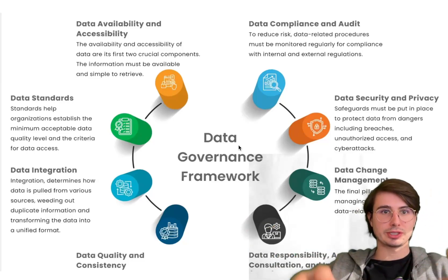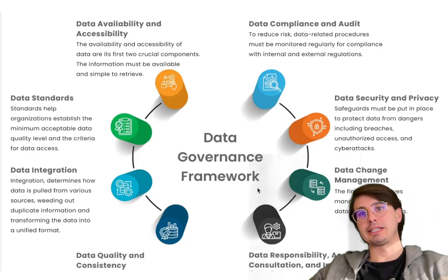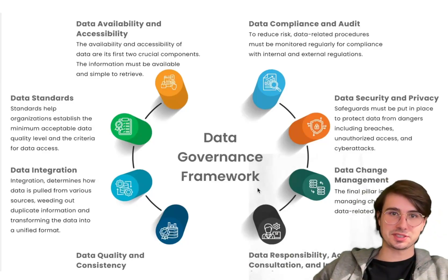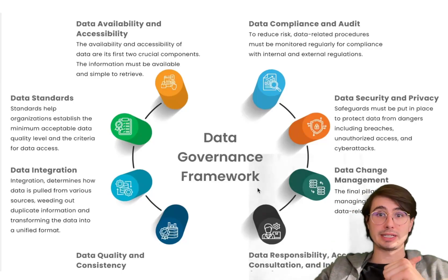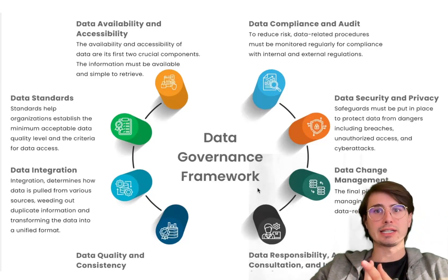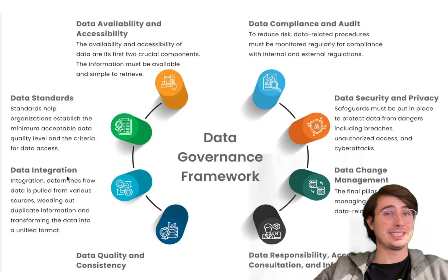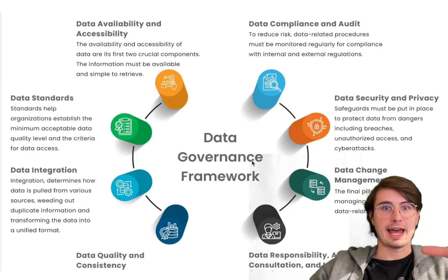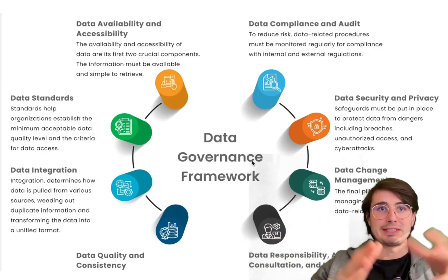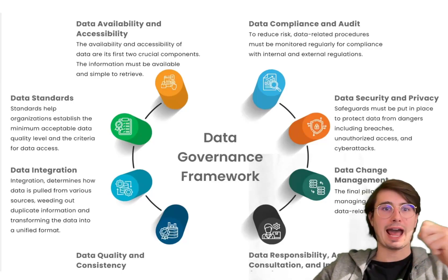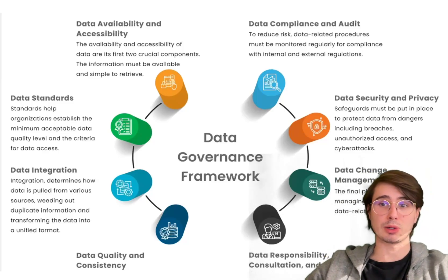Secondly, you're going to want to classify data based on sensitivity and regulatory requirements — tagging datasets that might contain PII data or sensitive business information. Also implement additional security measures like encrypting data at rest and in transit, and access logging of user actions for highly sensitive data. And finally, make sure you're tracking data lineage to ensure full transparency into data origins at each step of the transformation cycle. Data lineage tools help you maintain a history of how your datasets evolve, making it easier to trace errors, reproduce analyses, and comply with regulatory requirements.